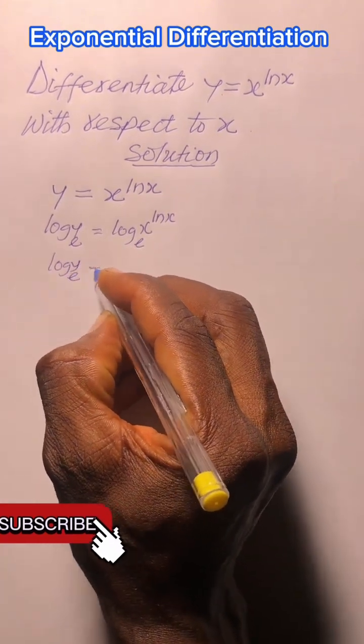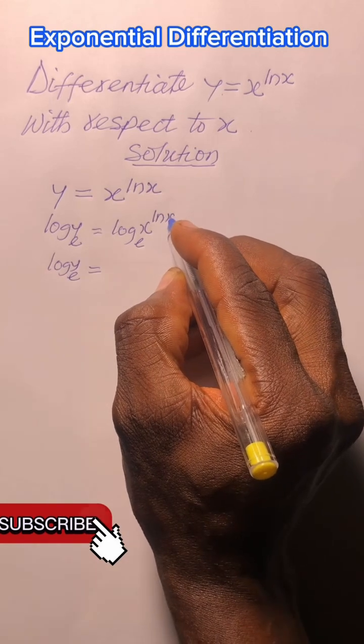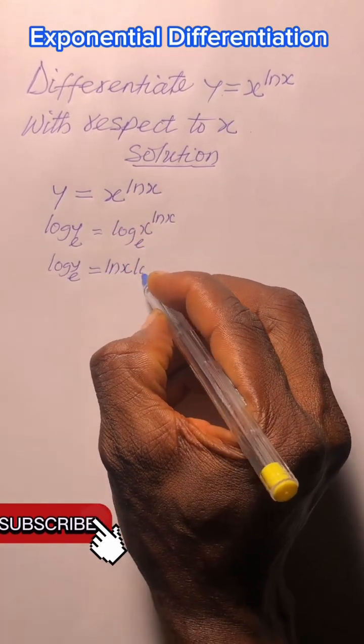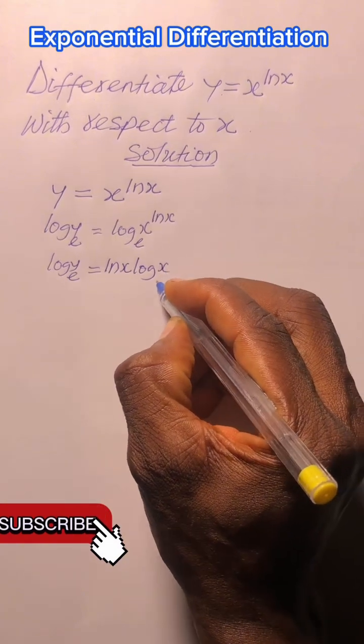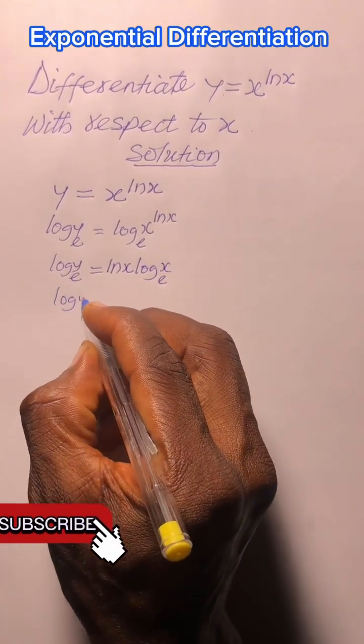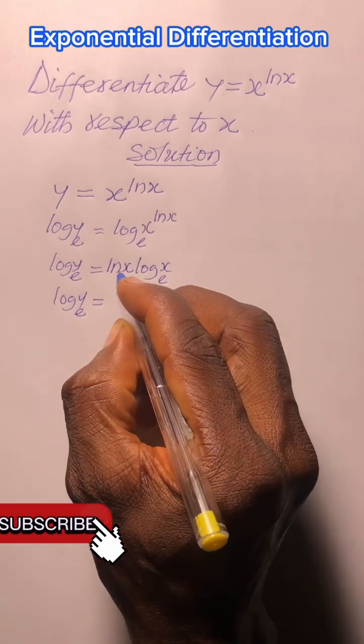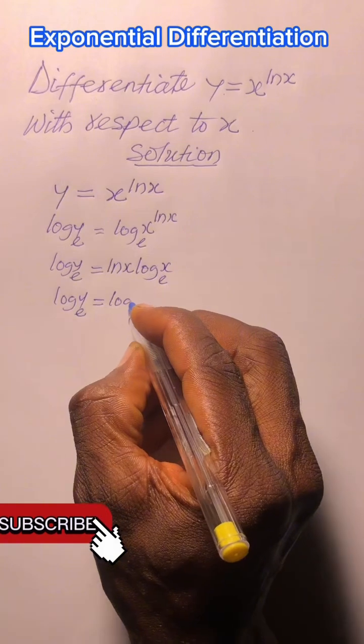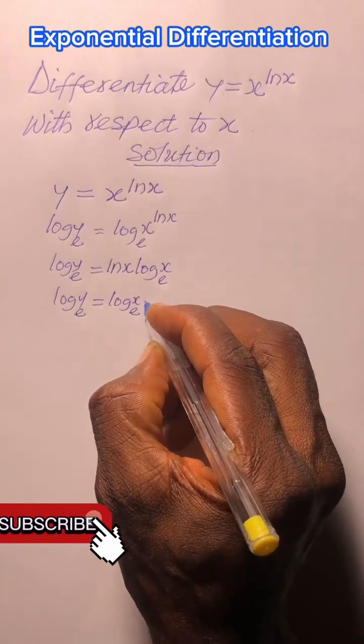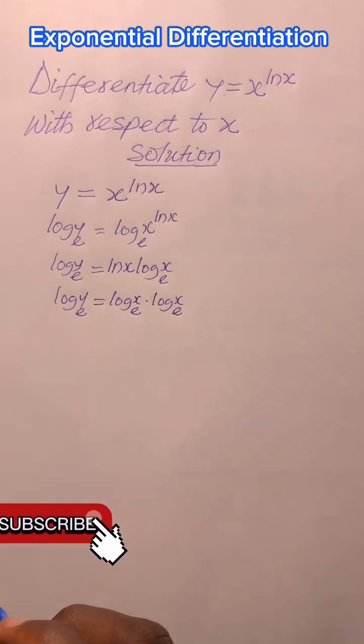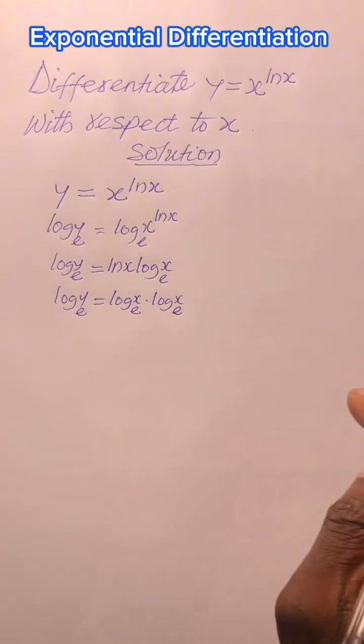Log_e(y) equals, this ln x being the power will come down, so we have ln x · log_e(x). Log_e(y) equals, ln x is the same thing as log_e(x), so we have log_e(x) · log_e(x). Now we are going to differentiate them implicitly.